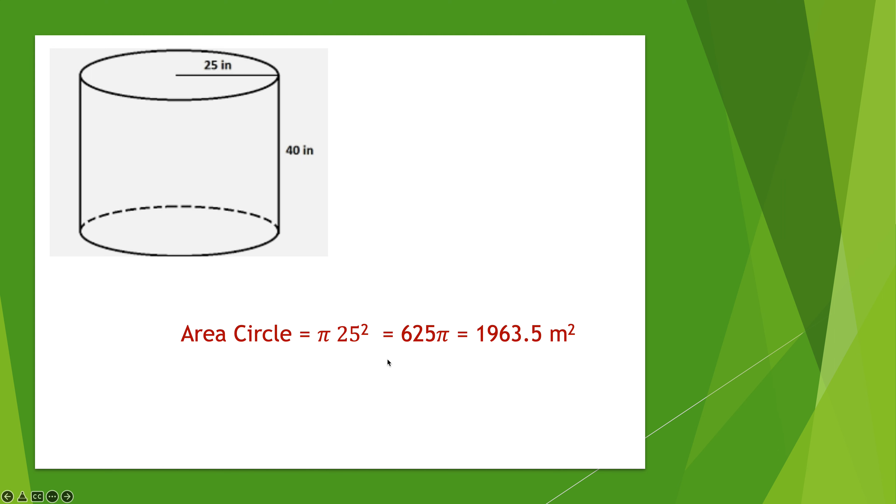1963.5 square meters is the area of that circle. But if I want the volume of the cylinder, I have to multiply that by the height because it's as if there's 40 levels of this circle, or 40 circles, hockey pucks if you will, stacked on top of each other. So that total volume would then be 1963.5 times 40, which is 78,540 cubic meters.